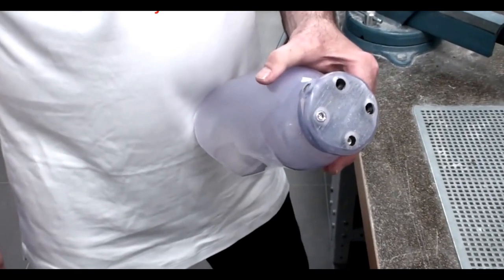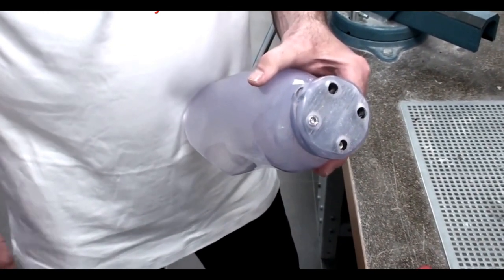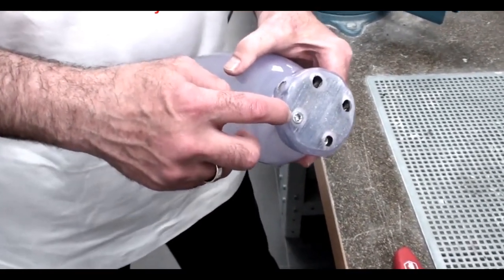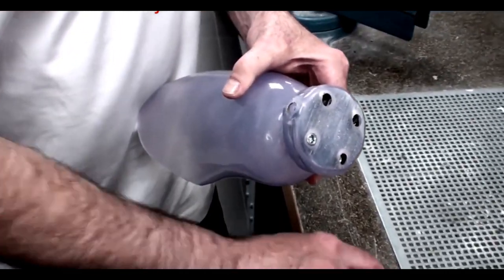To prepare the distal end of the DVS socket to receive the components, grind the surface flat to expose the top of the hex or cap screws. Then remove them.